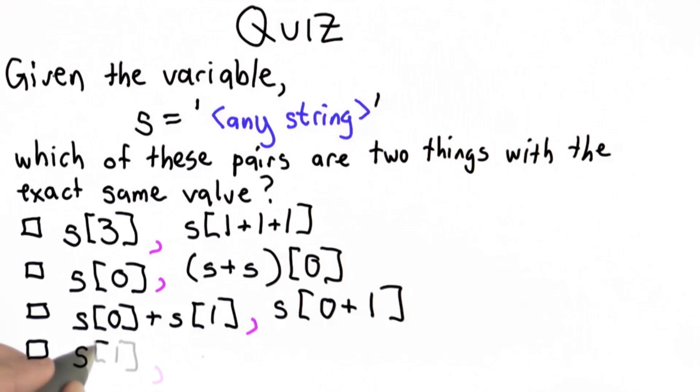For the fourth choice, we have s index 1 paired with (s + 'ity') index 1.